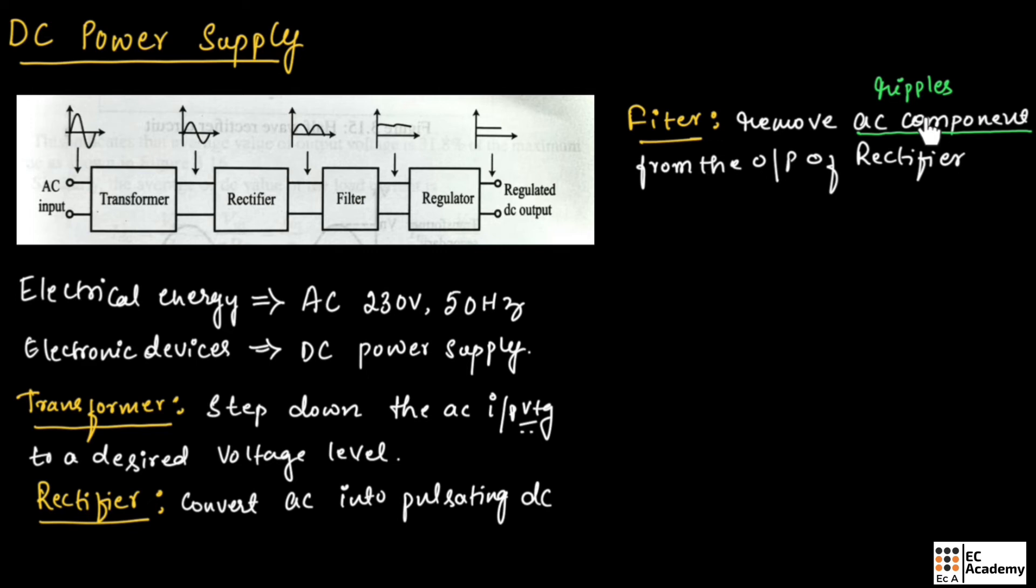We can say filter will remove ripple from the output of the rectifier. Finally, we have a voltage regulator. The function of voltage regulator is to produce regulated DC supply, which means it should provide constant output voltage.